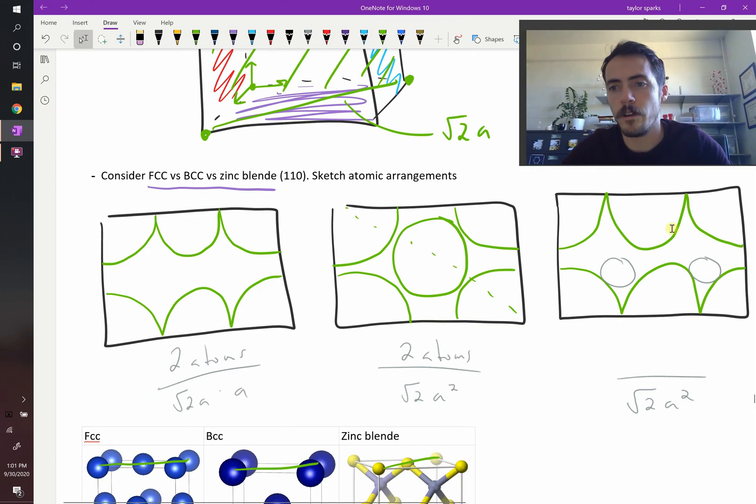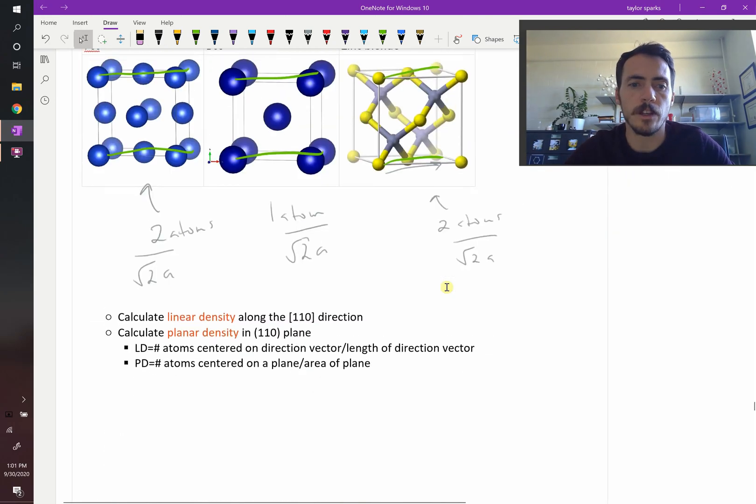And then over here, you've got the two atoms from before, from this picture, but then you've got two additional ones. So it's going to be four atoms, or two zinc atoms, two sulfur atoms, if it's the zinc blende structure, because there's two of each type. So that's planar and linear density.